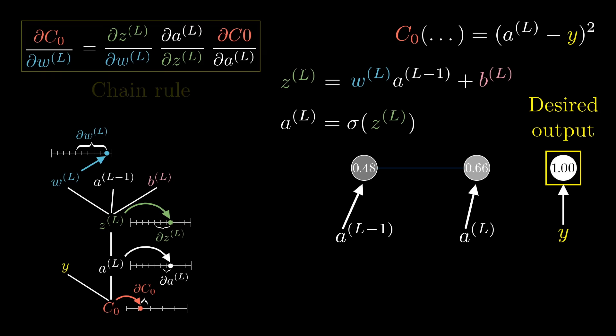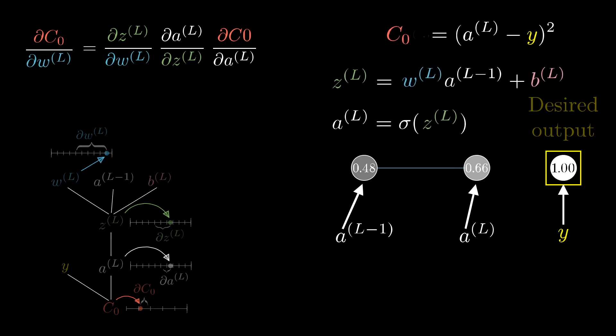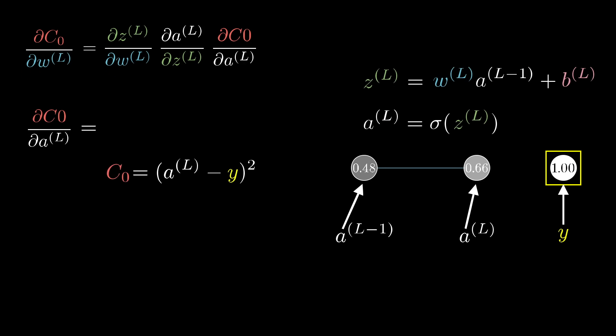So on screen right now, there's kind of a lot of symbols, and take a moment to just make sure it's clear what they all are. Because now, we're going to compute the relevant derivatives. The derivative of c with respect to a^l works out to be 2 times (a^l minus y).